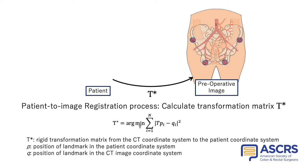In the landmark-based registration method, these calculations are achieved using pairs of P and Q points. The coordinate transformation matrix that minimizes the distance between point P and corresponding point Q is T asterisk. Such calculations are performed automatically using the Fiducial Registration Wizard module in 3D Slicer, by specifying the relevant point on the patient and the corresponding point on the computer image.